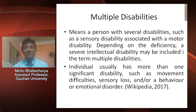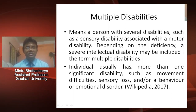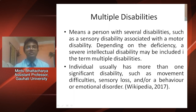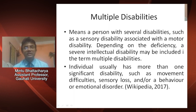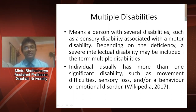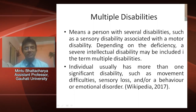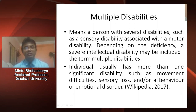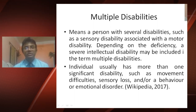We will be discussing multiple disabilities. A person with multiple disabilities has several disabilities, such as a sensory disability associated with a motor disability. Depending upon the deficiency, a severe intellectual disability may be included. The term multiple disabilities usually means more than one significant disability, such as movement difficulties, sensory loss, and/or behavior or emotional disorder.